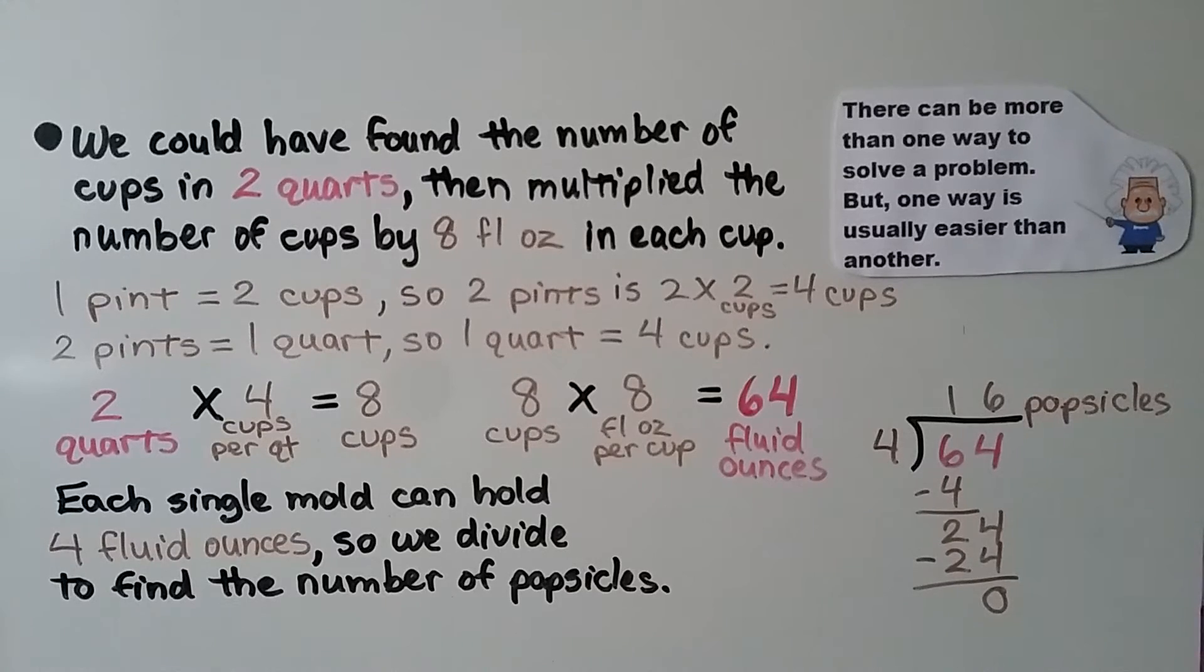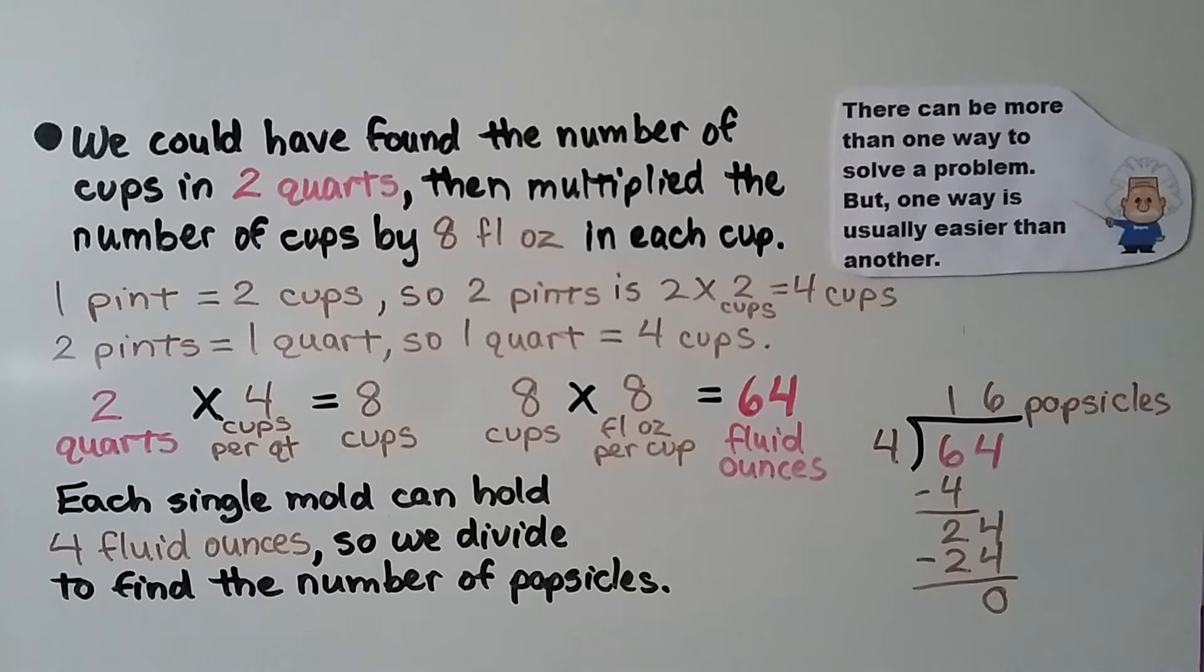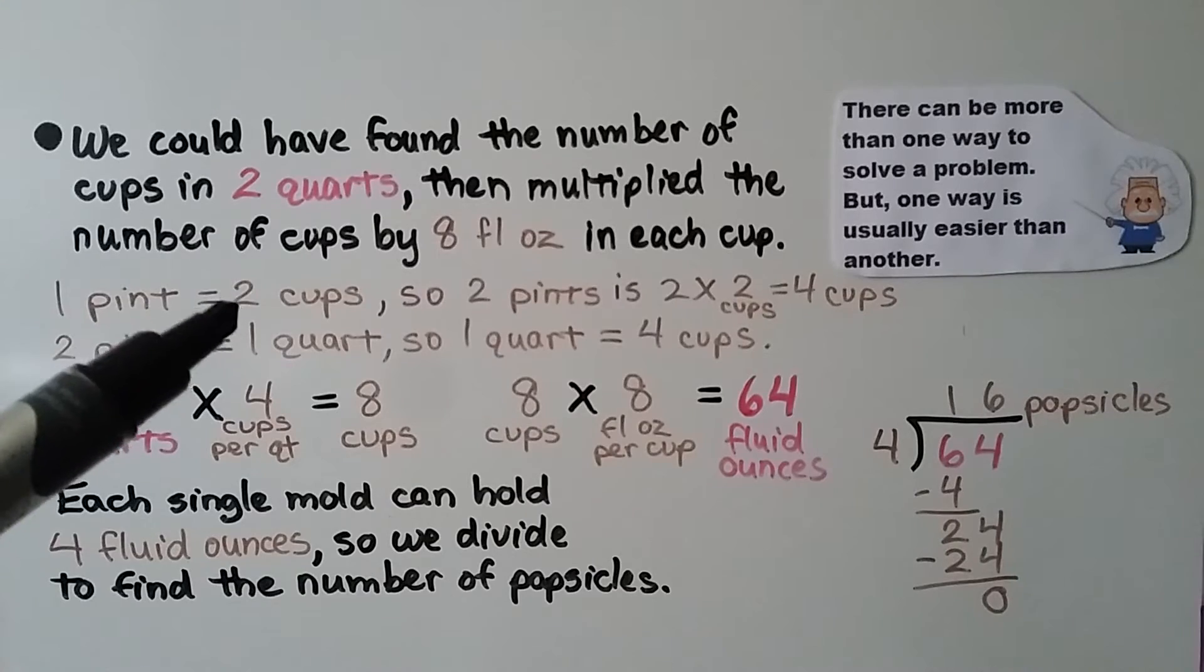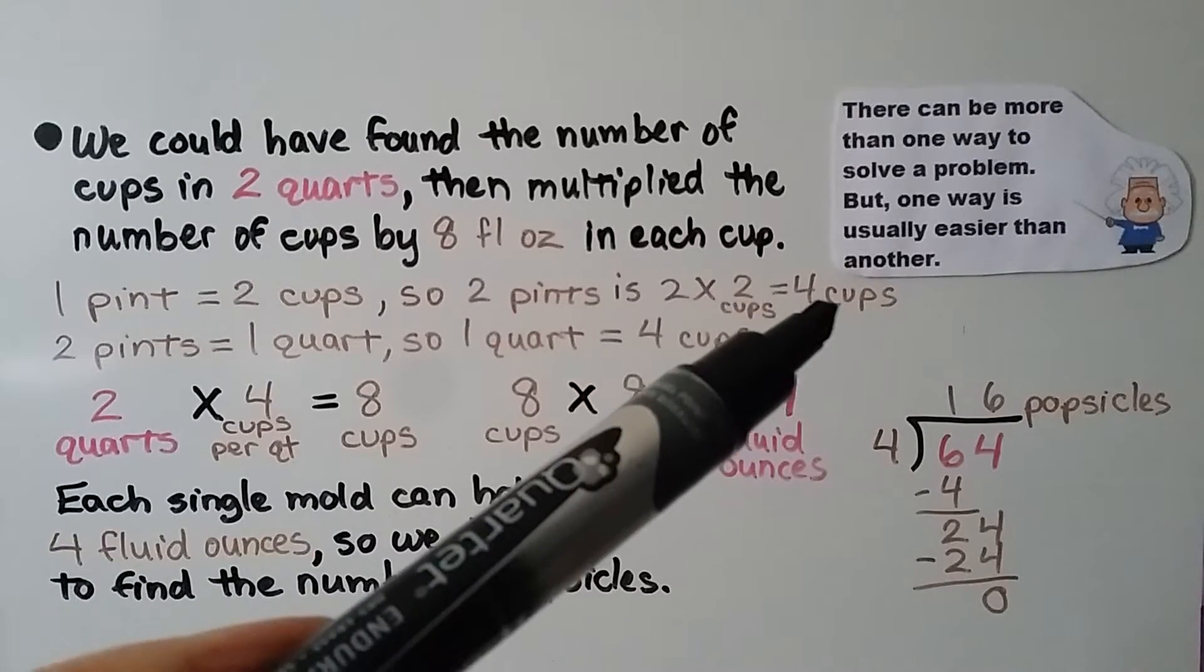Now if you're a regular viewer, you've heard me say before that there can be more than one way to solve a problem, but one way is usually easier than another. We could have found the number of cups in two quarts, then multiplied the number of cups by eight fluid ounces in each cup. One pint is two cups. So two pints is two times two cups. That's four cups.